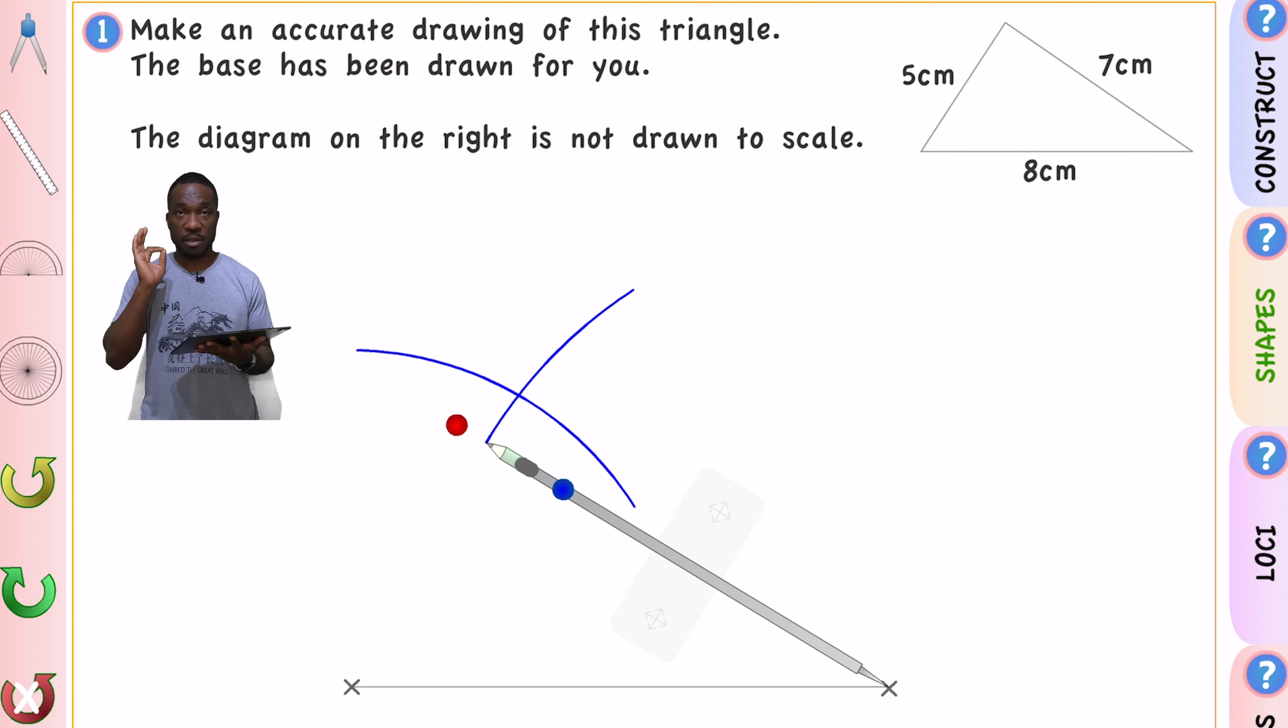Don't forget those blue lines are my arcs. They are worth marks on the exam. So please do not draw them and then rub them out. Keep them there and secondly make sure that they are not dark. They need to be quite light. So don't be too heavy on the compasses there.